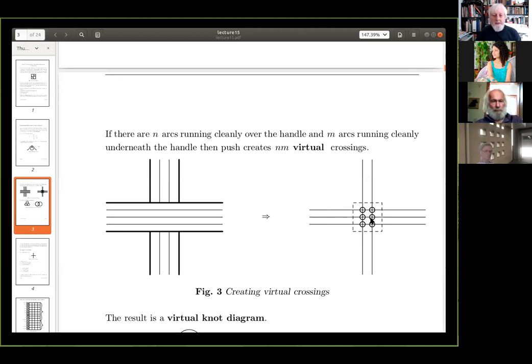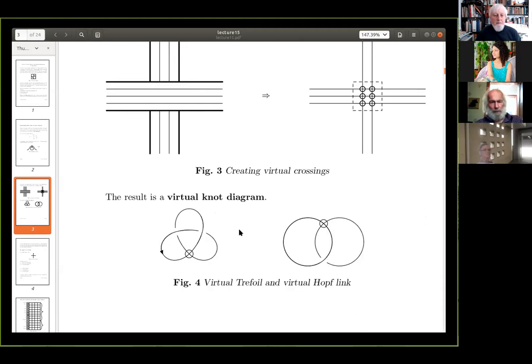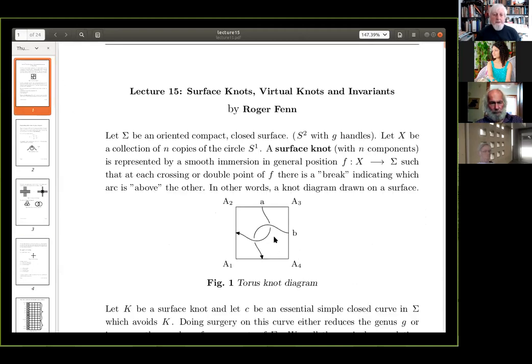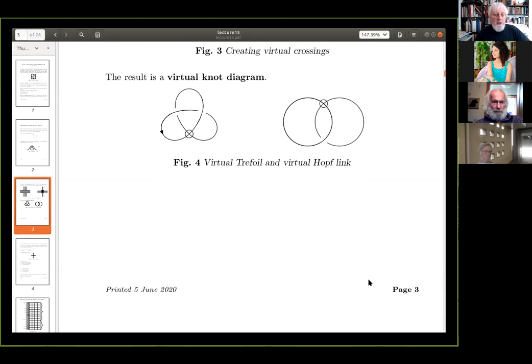So, we can always assume that running over the handle and under the handle, they're all nicely. They go across. There's no other crossings in there. We can always assume that. And when you push it down, you create lots of virtual crossings. Okay. So, in this case, there's six. And the result is a virtual knot diagram. This is a virtual trefoil, which is actually the virtual version of this surface knot here. Okay.